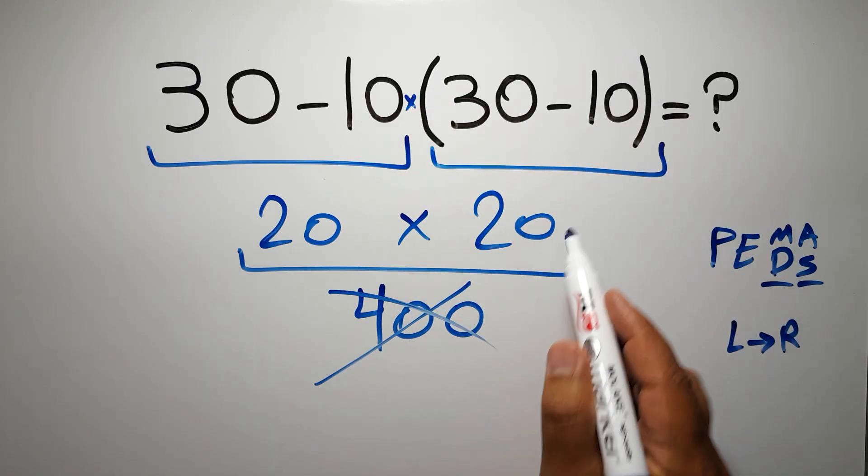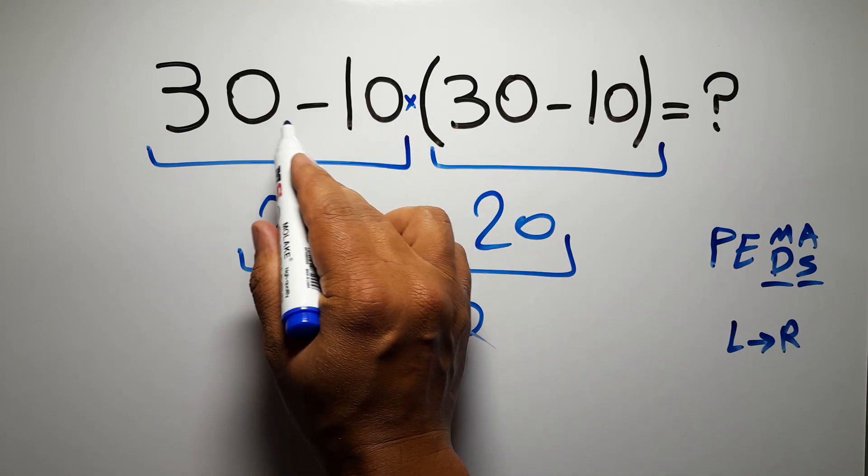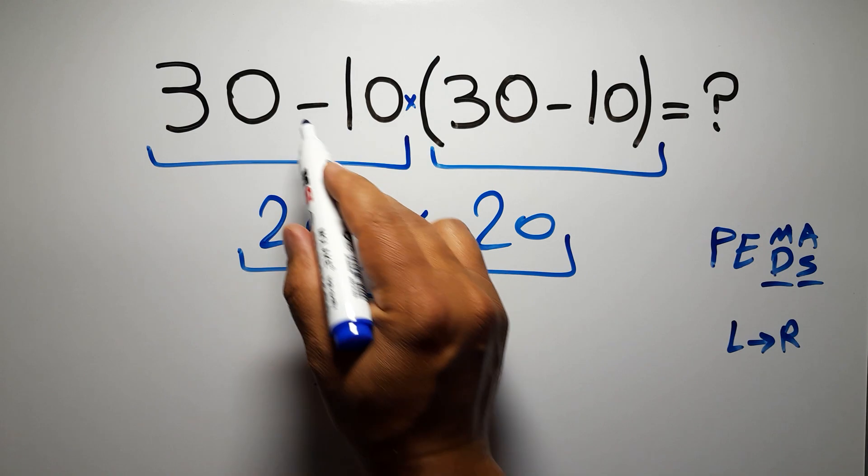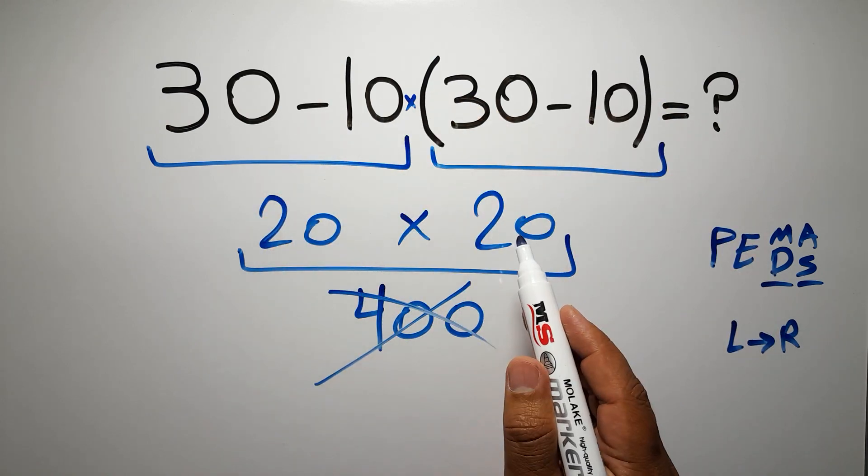So here according to PEMDAS, first we have to do this parentheses, then this multiplication, and finally this subtraction. If you do this subtraction before this multiplication or this parentheses, it is wrong.